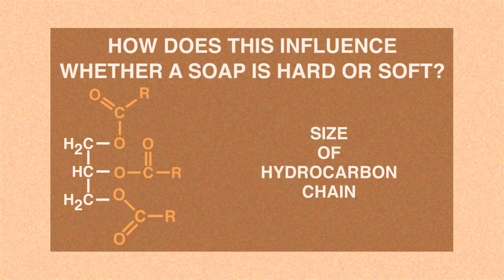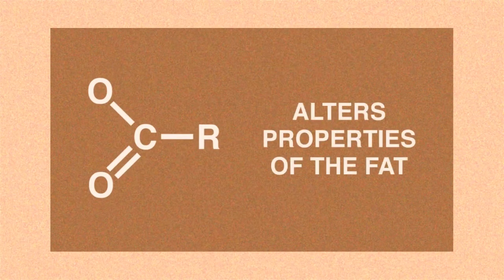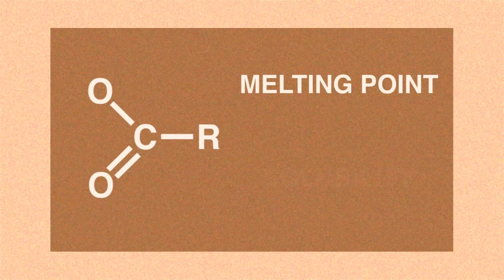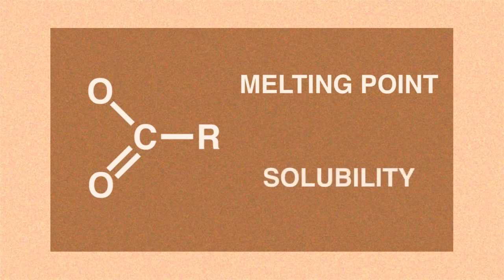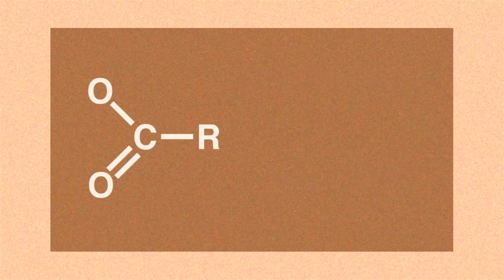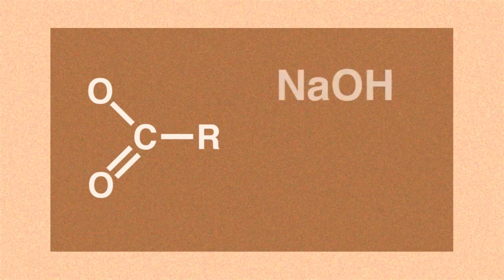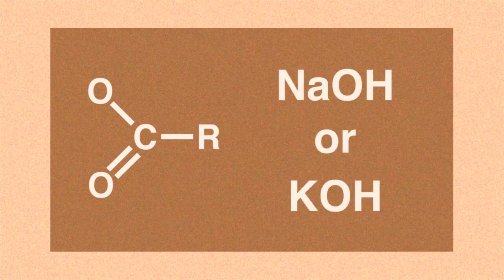The R groups of a particular length alter the fat's properties, particularly its melting point and its solubility. In addition, the choice of base, such as whether you use sodium hydroxide or potassium hydroxide, is also important.